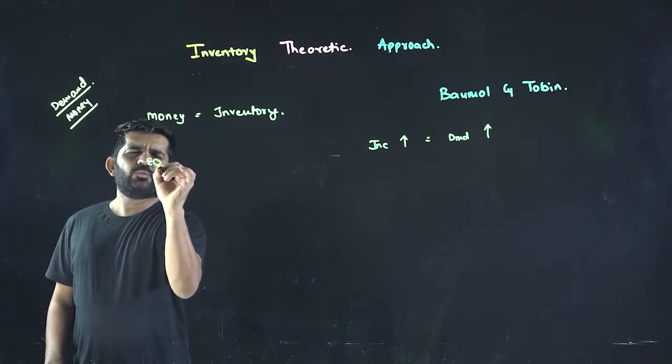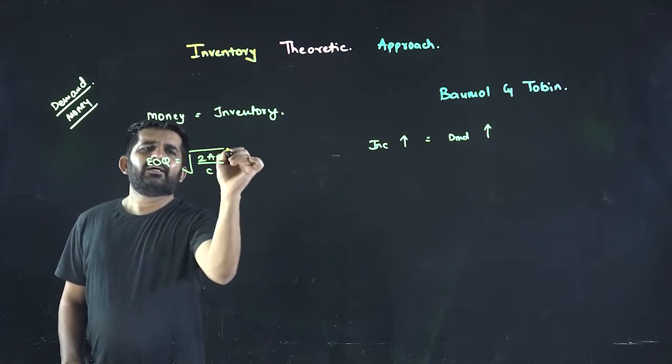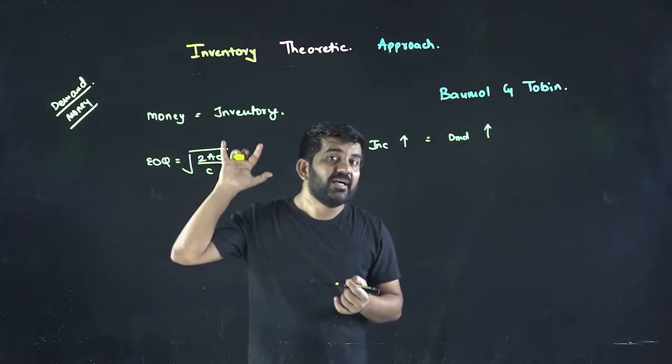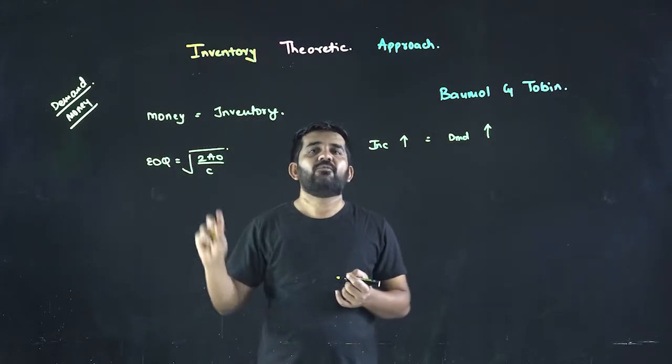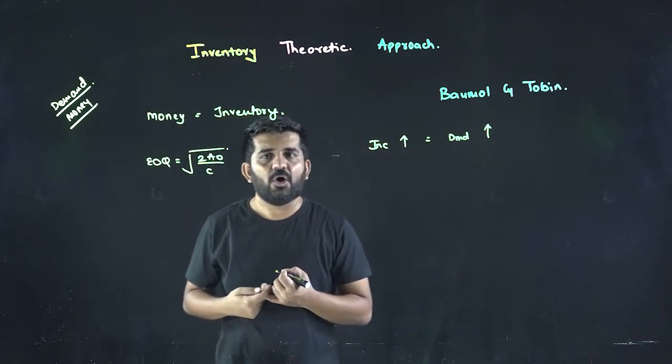We have already learned EOQ. This is the same concept: √(2AO/C), which gives you an economic ordering quantity. And this concept will be helpful when we learn inventory theoretic approach for demand of money.